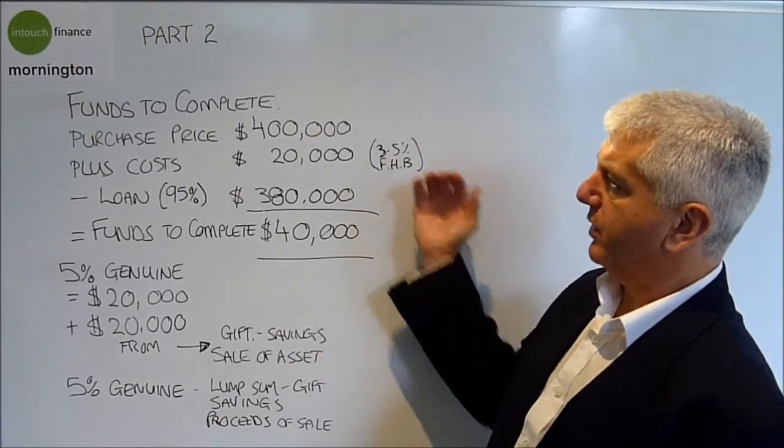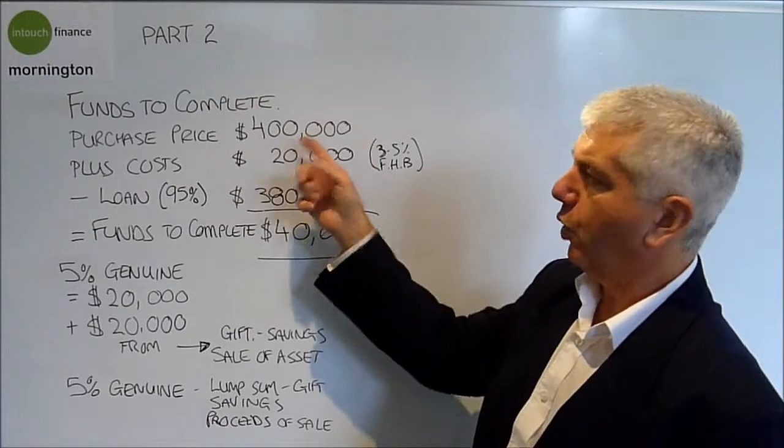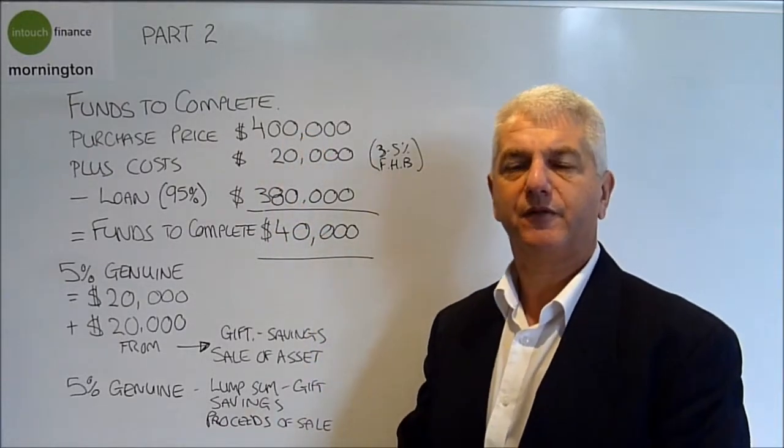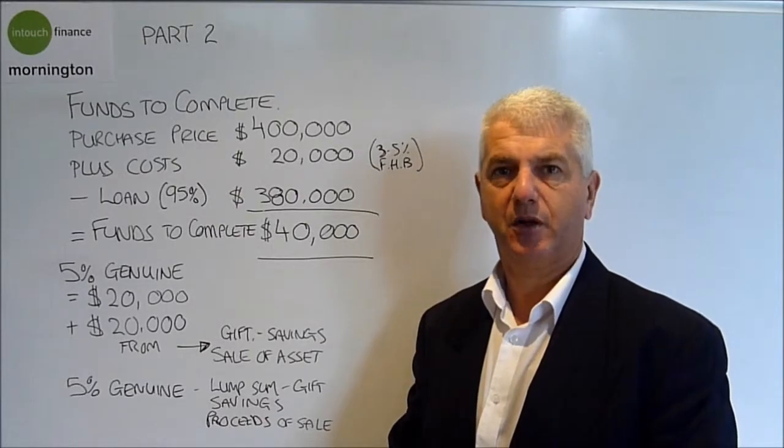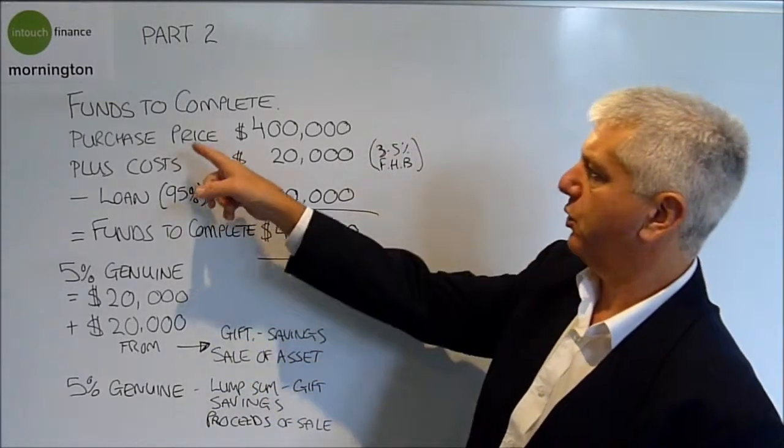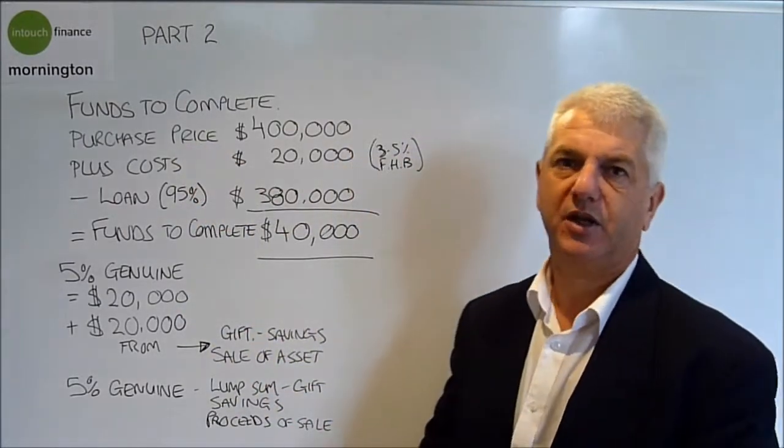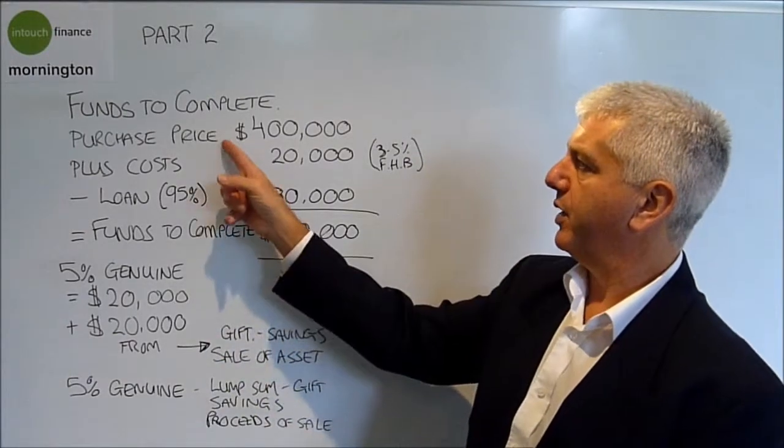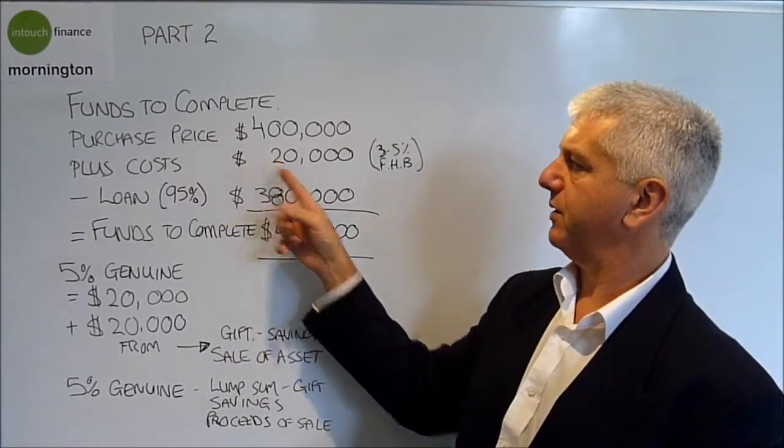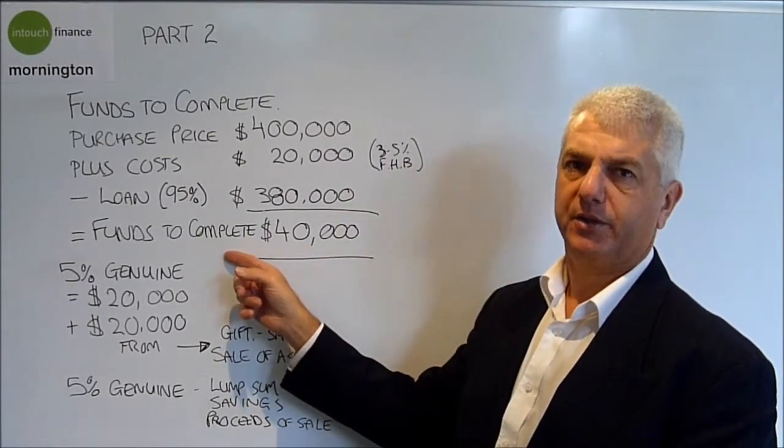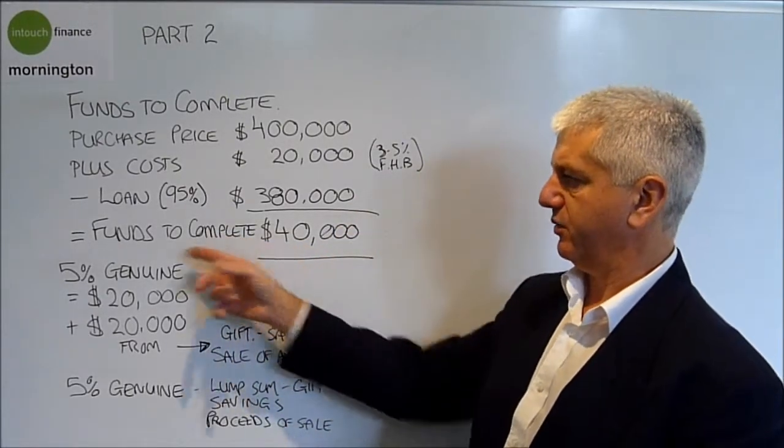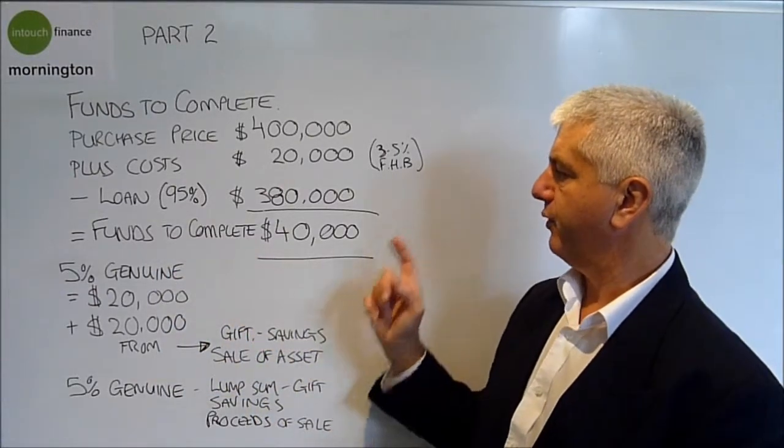What people need to understand is that the funds to complete incorporates the deposits. People get confused and say, oh, I've got to come up with a $20,000 deposit or $40,000 deposit. Yes, you do, but that's all taken into the purchase price. So let's simplify it. The purchase price plus the cost minus the maximum loan amount equals the funds required to complete the purchase. That's what that stands for: funds to complete the purchase for $40,000.